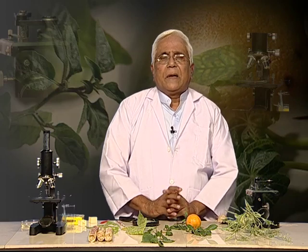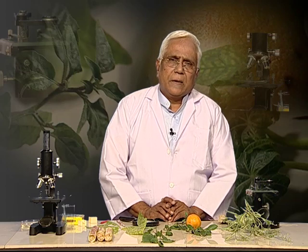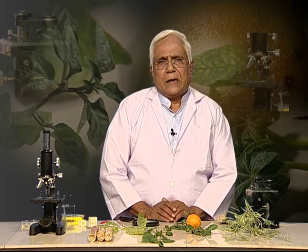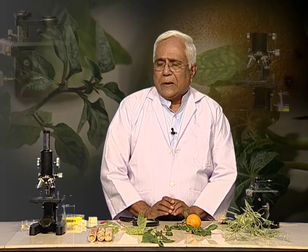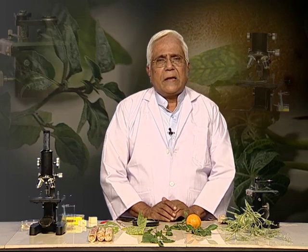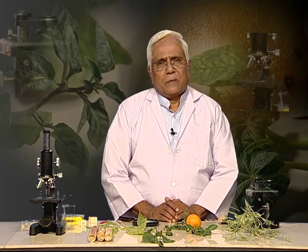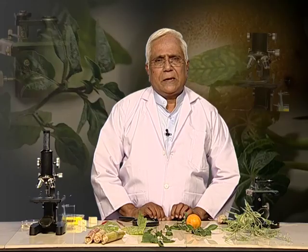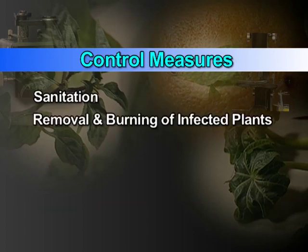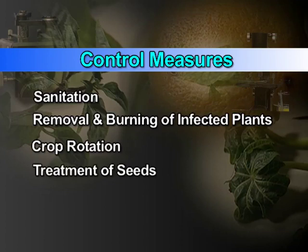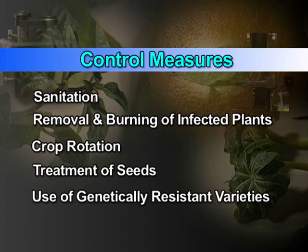Let us summarize the diseases. Pathogens belong to either bacteria, fungi, or viruses. Bacterial and fungal diseases can be studied — we can examine pathogen characters and symptoms in the laboratory with the help of a microscope. In case of viral diseases, only symptoms can be studied, as viruses cannot be seen without an electron microscope. Measures to control disease spread are sanitation, removal and burning of infected plants, crop rotation, seed treatment, fungicides or bactericides, and use of genetically resistant varieties.